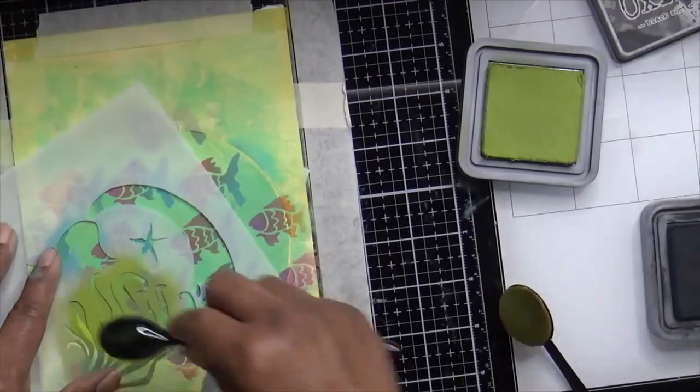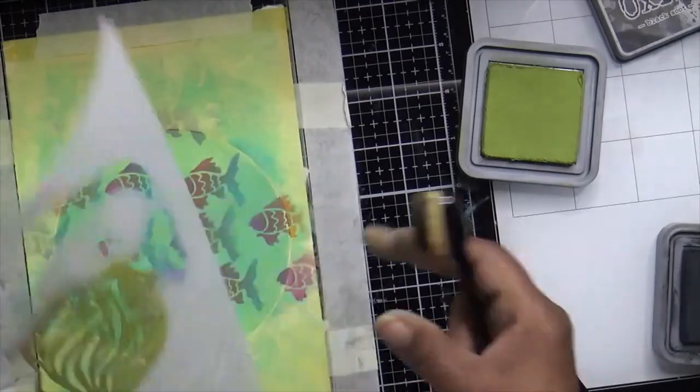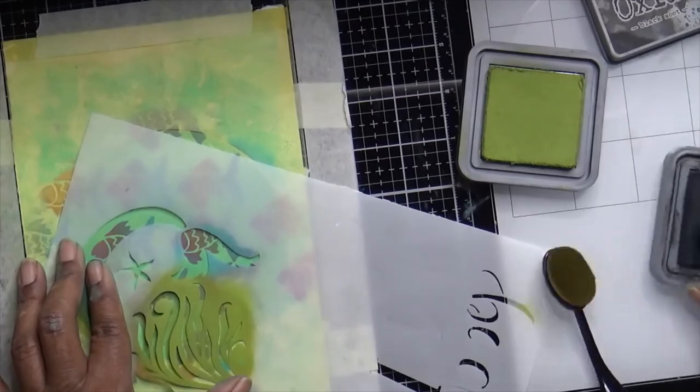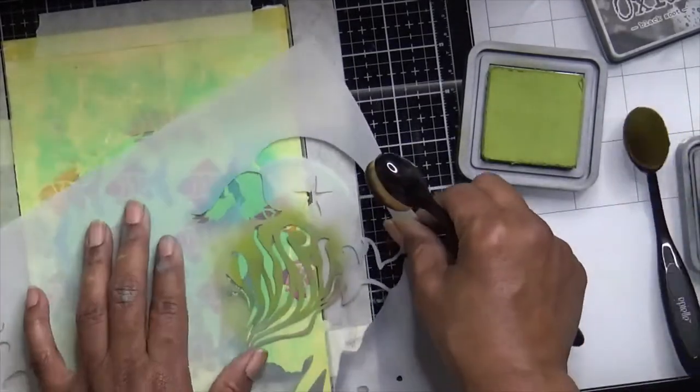Now I have a mermaid stencil and I'm just going to use her wavy hair as the seaweed coming up from the bottom. And I will be going over some of the fish that's at the bottom, but that's okay because that's more realistic.